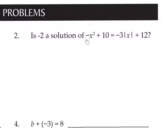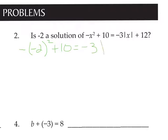Remember, this negative is different from the x — it is not part of the x. So we have a negative here, then parentheses, then put the x value in, which is negative 2, and put the square on the outside. Plus 10 equals negative 3, absolute value of x which is negative 2, plus 12.